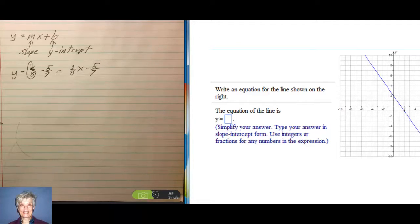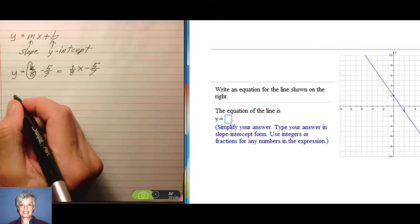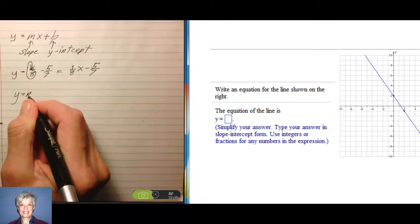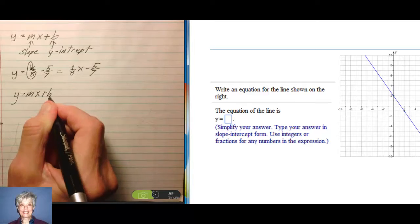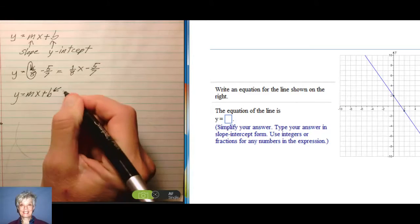Now, what does that mean? That means if you've got y equals mx plus b, your b is going to be 2.